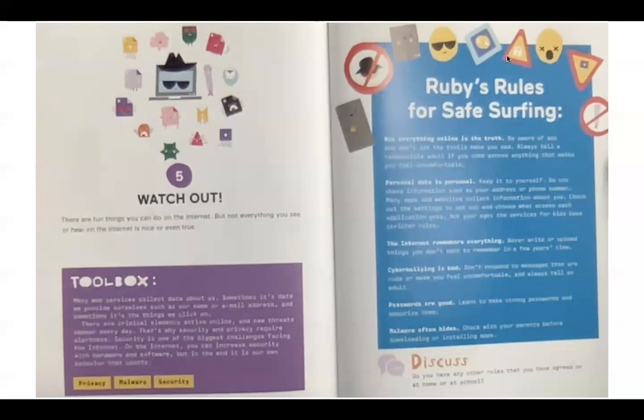Ruby's rules for safe surfing. Not everything online is the truth. Be aware of ads and don't let the trolls make you sad. Always tell a responsible adult if you come across anything that makes you feel uncomfortable. Personal data is personal. Keep it to yourself. Do not share information such as your address or phone number. Many apps and websites collect information about you. Check out the settings to opt out and choose what access each application gets.